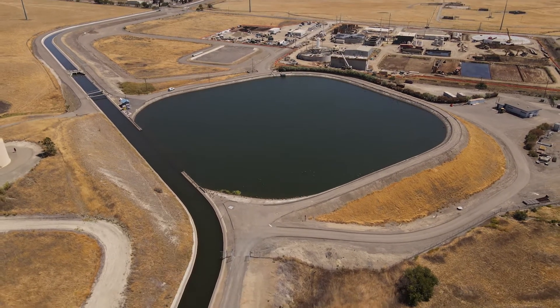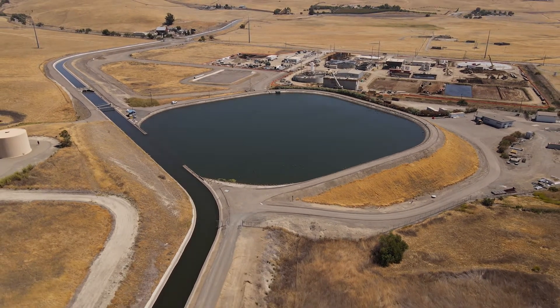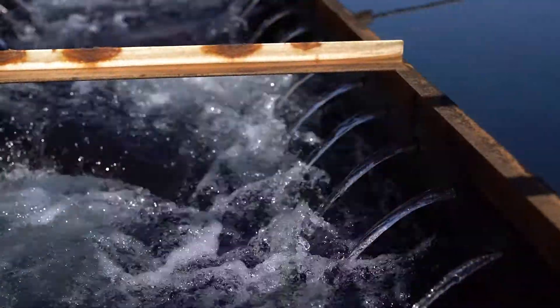Algal blooms tend to grow in surface water exposed to sun, giving water an earthy or musty taste and odor, which ozone gets rid of.